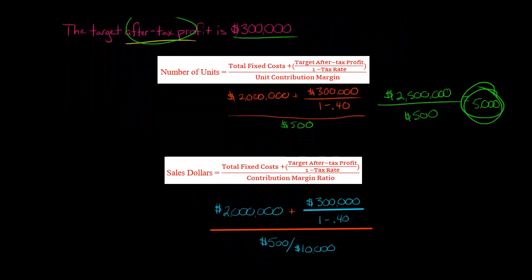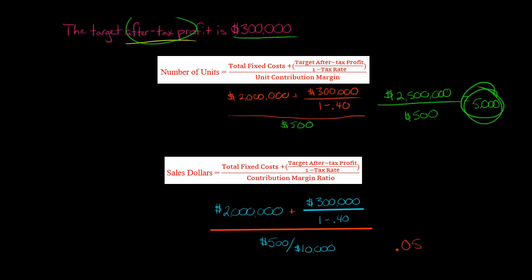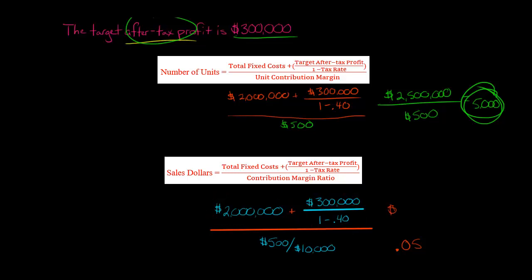The sales revenue formula is very similar. Instead of contribution margin per unit in the denominator, you use the contribution margin ratio. The CM ratio is the contribution margin per unit ($500) divided by the selling price per unit ($10,000), which equals 0.05. The numerator is the same: fixed costs plus $300,000 target after-tax profit divided by 0.6, giving $2.5 million. Dividing $2.5 million by 0.05 equals $50 million.